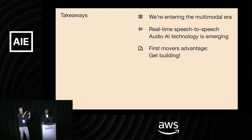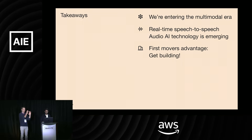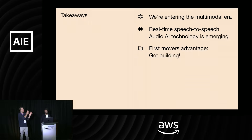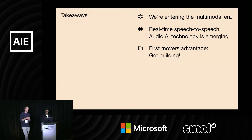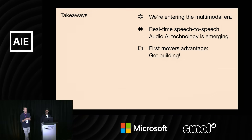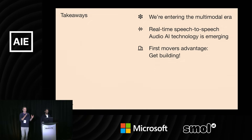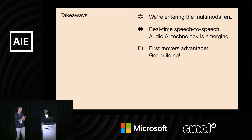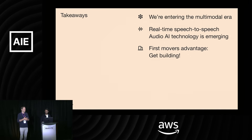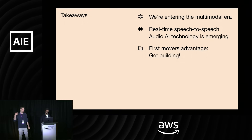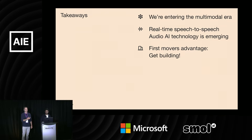Just to wrap this all up: we're really entering the multimodal era — in addition to text-based models, we now have video, image, and audio models. This real-time speech-to-speech technology is emerging, and we actually had a low-key update yesterday — a new real-time API snapshot that was released and is a lot better. Now is really the time to build — you have a first-mover advantage. The technology is getting to that point where it is good enough to build scalable production applications. We're really excited to see what you all build. We'll be around after the talk if you have any questions.